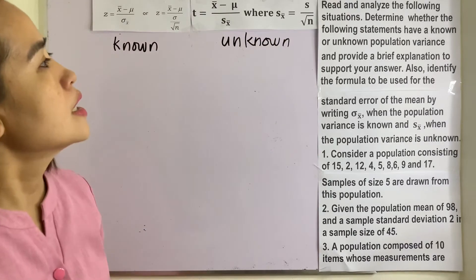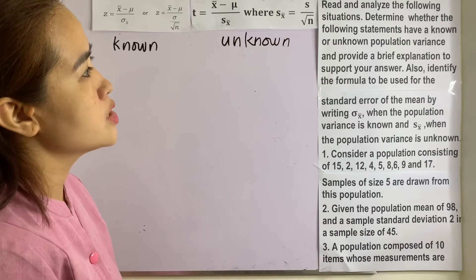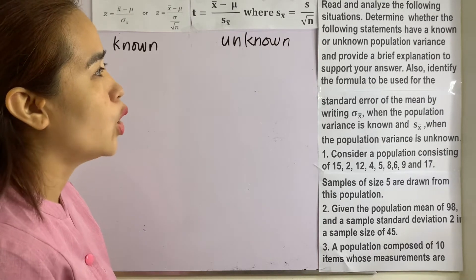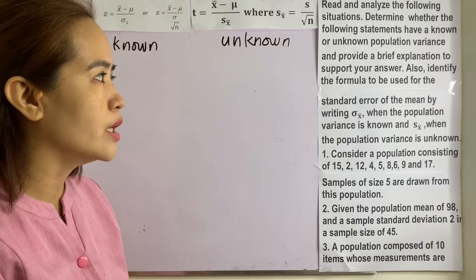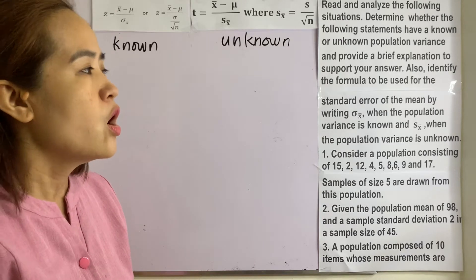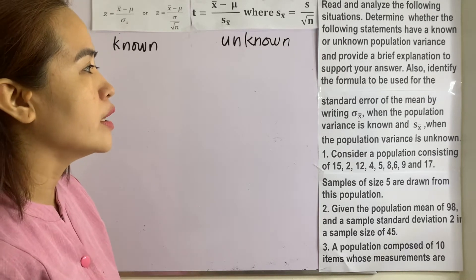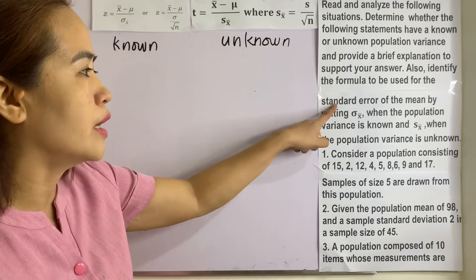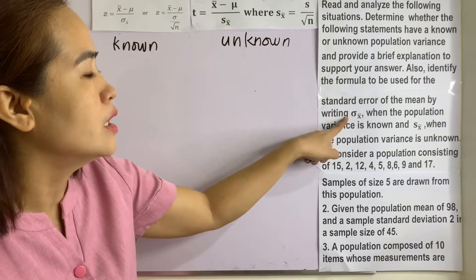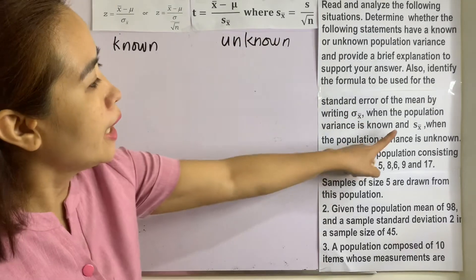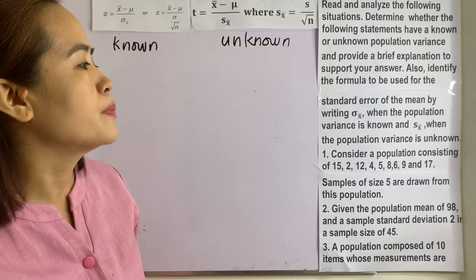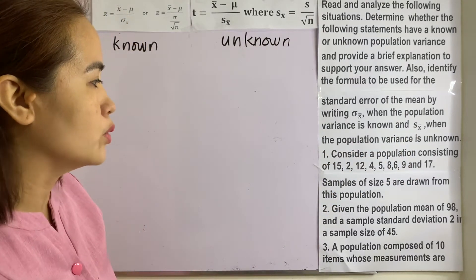Let us have these examples. Read and analyze the following situations. Determine whether the following statements have known or unknown population variance, and provide a brief explanation to support your answer. Also identify the formula to be used for the standard error of the mean — this one is the standard error for the mean when the population variance is known, and this one is the standard error of the mean when the population variance is unknown.